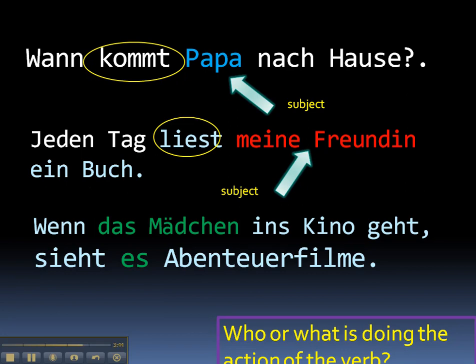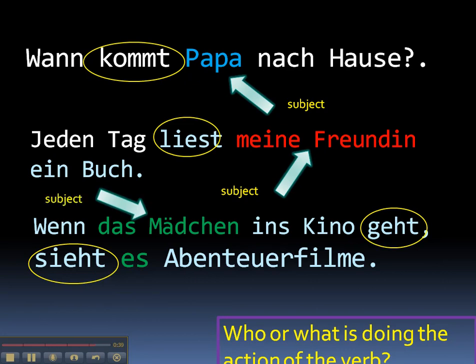The third example has two clauses — two parts to the sentence — and that means two verbs and two subjects. Let's find the verbs first. Wenn das Mädchen ins Kino geht, sieht es Abenteuerfilme — when the girl goes to the movies, she sees adventure films. The first verb is geht, goes, and in the second clause it's sieht, sees. Who or what is doing the going? Das Mädchen — she's the subject and in the nominative. In the second clause, es is doing the seeing, so it's the subject. Same question, same result. That's how we figure out when to use the nominative case. Good luck with it, and don't forget to get your head around learning those forms. Bye for now.